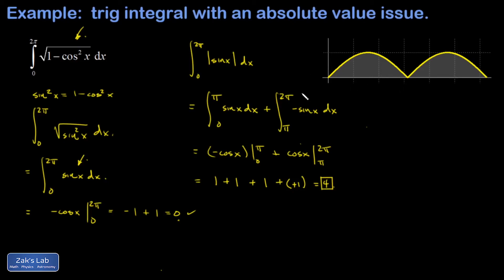To wrap things up, here's a picture of √(1 − cos²x) with the area represented by the integral shaded in. Clearly this is not zero. Checking whether four is reasonable: the graph has grid spaces, and in the first bump there are about two total spaces, and in the second bump about two total spaces, so four is a reasonable answer for this integral.